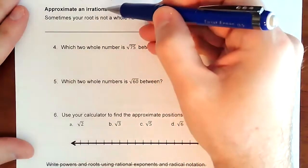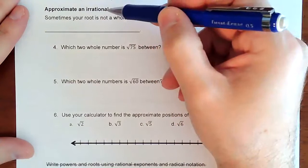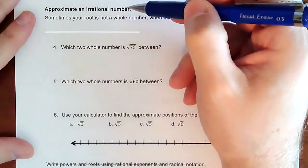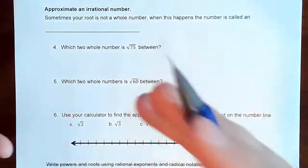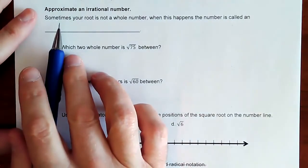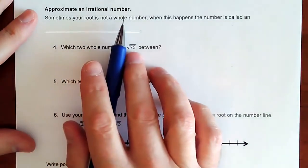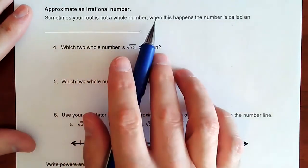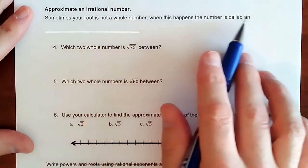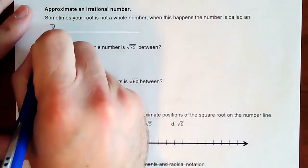In this video, we are going to talk about how we can approximate some irrational numbers. We're going to define that in just a second. So it says sometimes your root, if you're going to square root something, is not a whole number. When this happens, the number is called an irrational number.